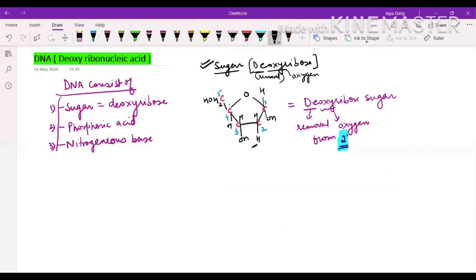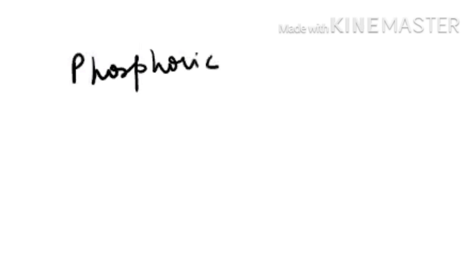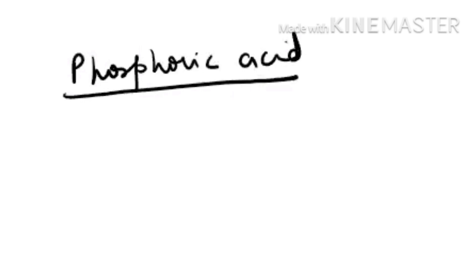Now let us look at phosphoric acid. The structure of phosphoric acid is written as H3PO4. We will also be showing it diagrammatically.